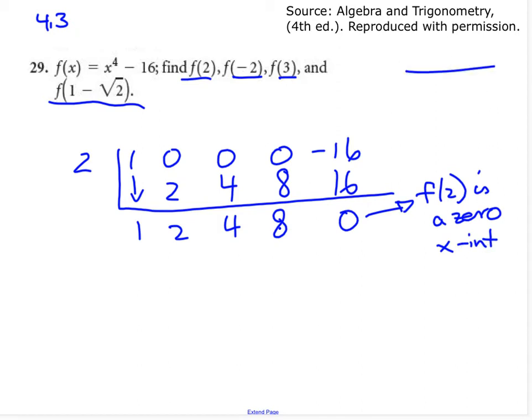but also you could call it an x-intercept. So at 2, 1, 2 right there is an x-intercept for whatever this polynomial looks like.